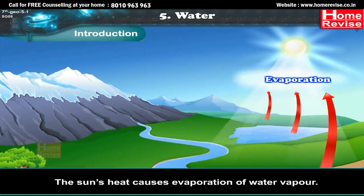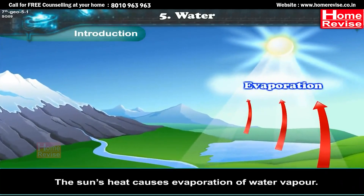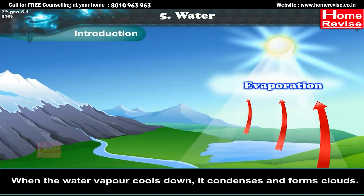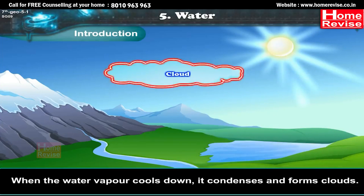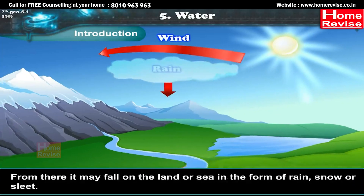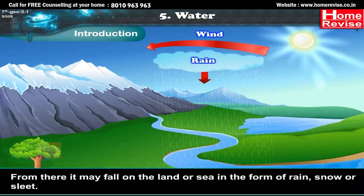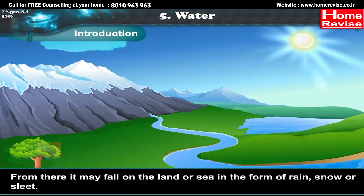The sun's heat causes evaporation of water vapour. When the water vapour cools down, it condenses and forms clouds. From there, it may fall on the land or sea in the form of rain, snow, or sleet.